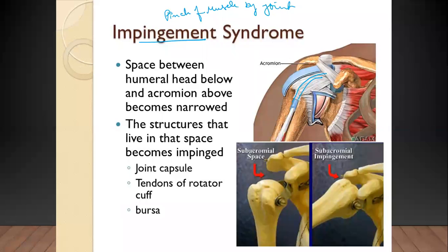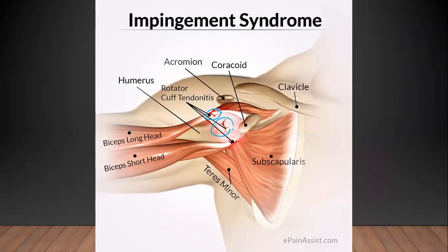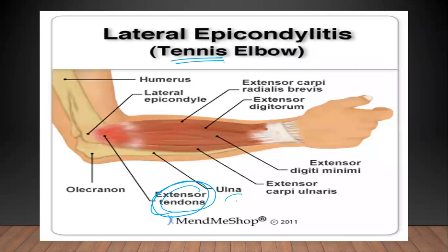Impingement syndrome is any tendon getting pinched between moving joints — caused by joint cavity deformity, bursae taking up too much space, or sudden jerky movements. Lateral epicondylitis (tennis elbow) is inflammation of extensor tendons from repeated movement. Medial epicondylitis (golfer's elbow) involves flexor tendons on the medial epicondyle. Olecranon bursitis is called student's elbow.